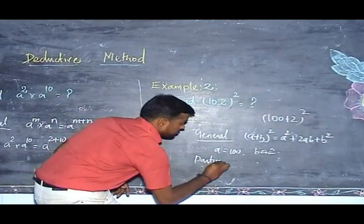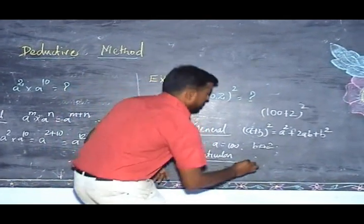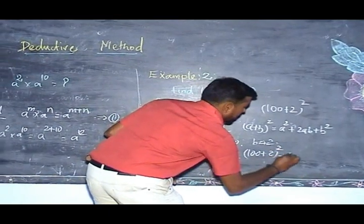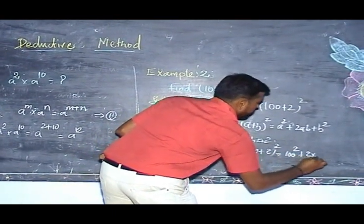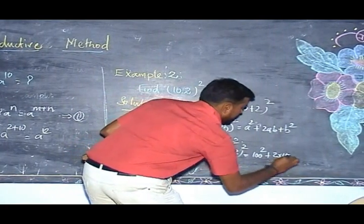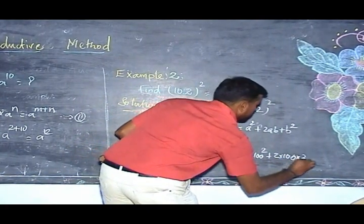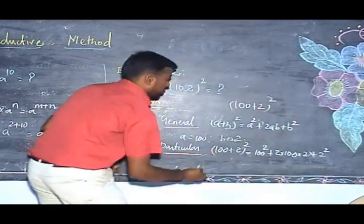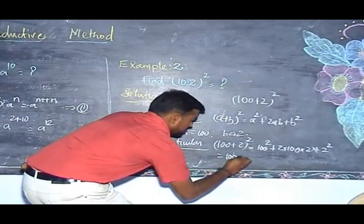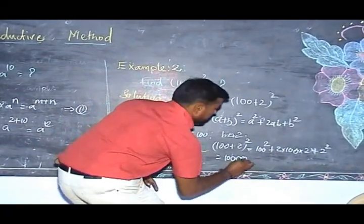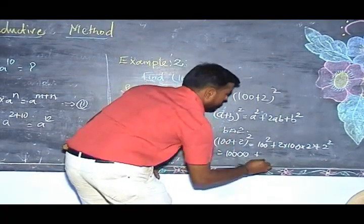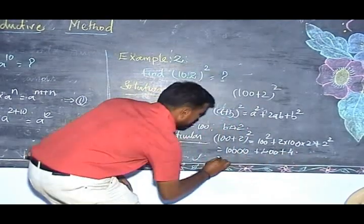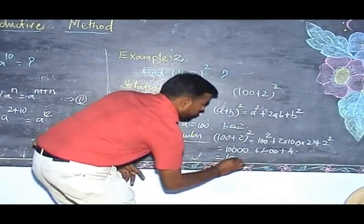Applying the formula: (100 + 2)² = 100² + 2 × 100 × 2 + 2². Therefore, 100² = 10,000; 2 × 100 × 2 = 400; and 2² = 4. Therefore, the final answer is 10,404.